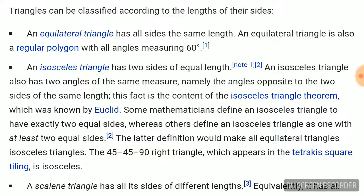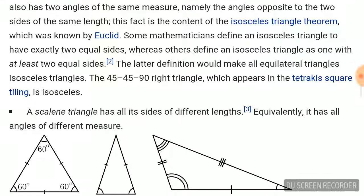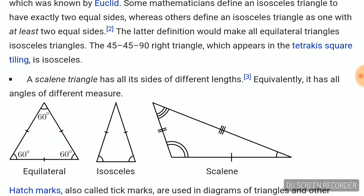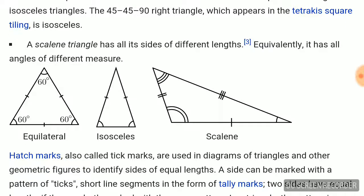An isosceles triangle has two sides of equal length. An isosceles triangle also has two angles of the same measure, namely the angles opposite to the two sides of the same length. This fact is the content of the isosceles triangle theorem which was known by Euclid. A scalene triangle has all its sides of different lengths. Equivalently, it has all angles of different measures.